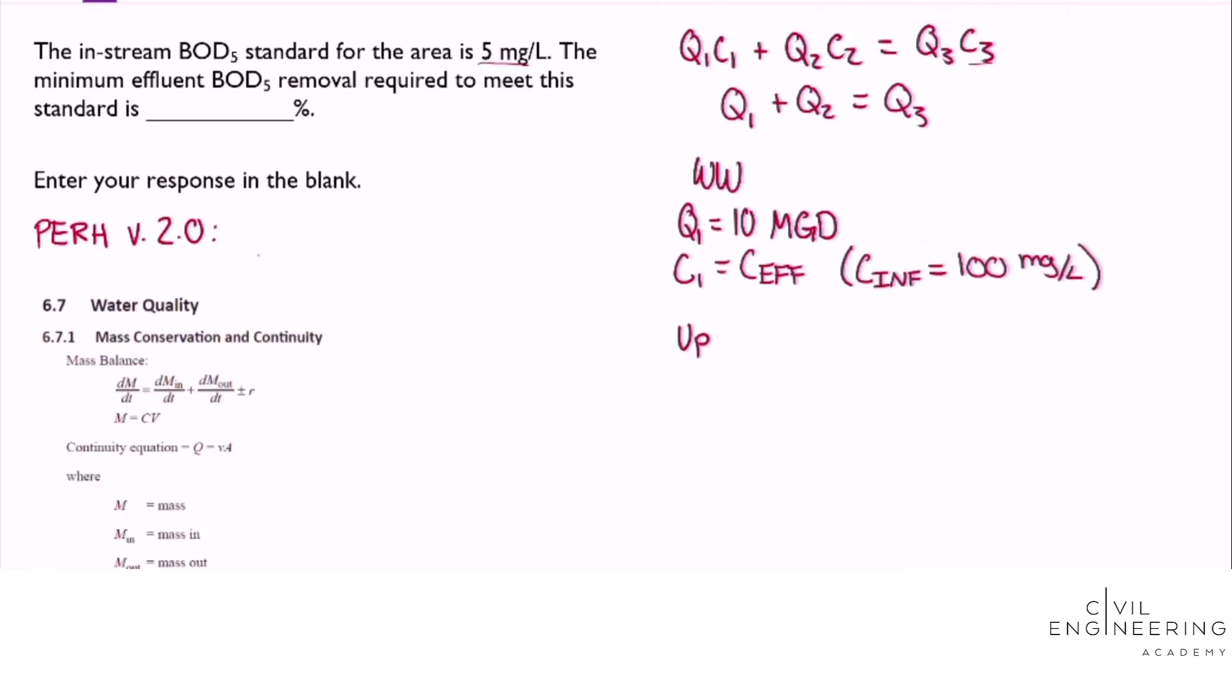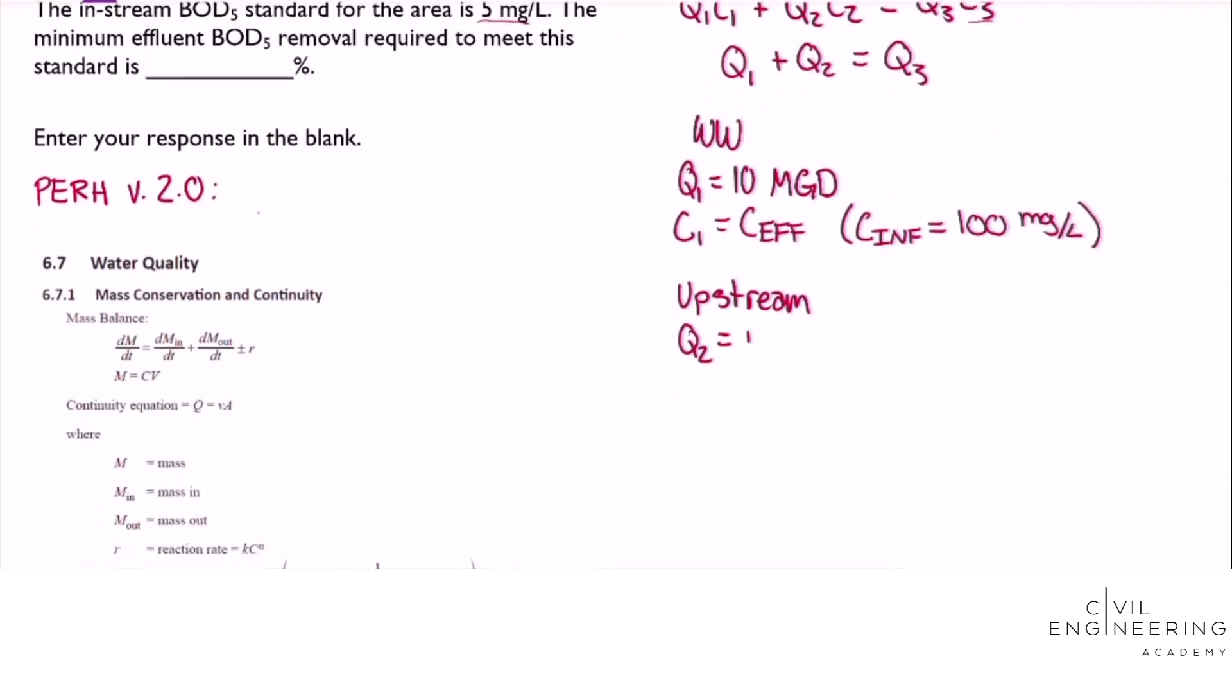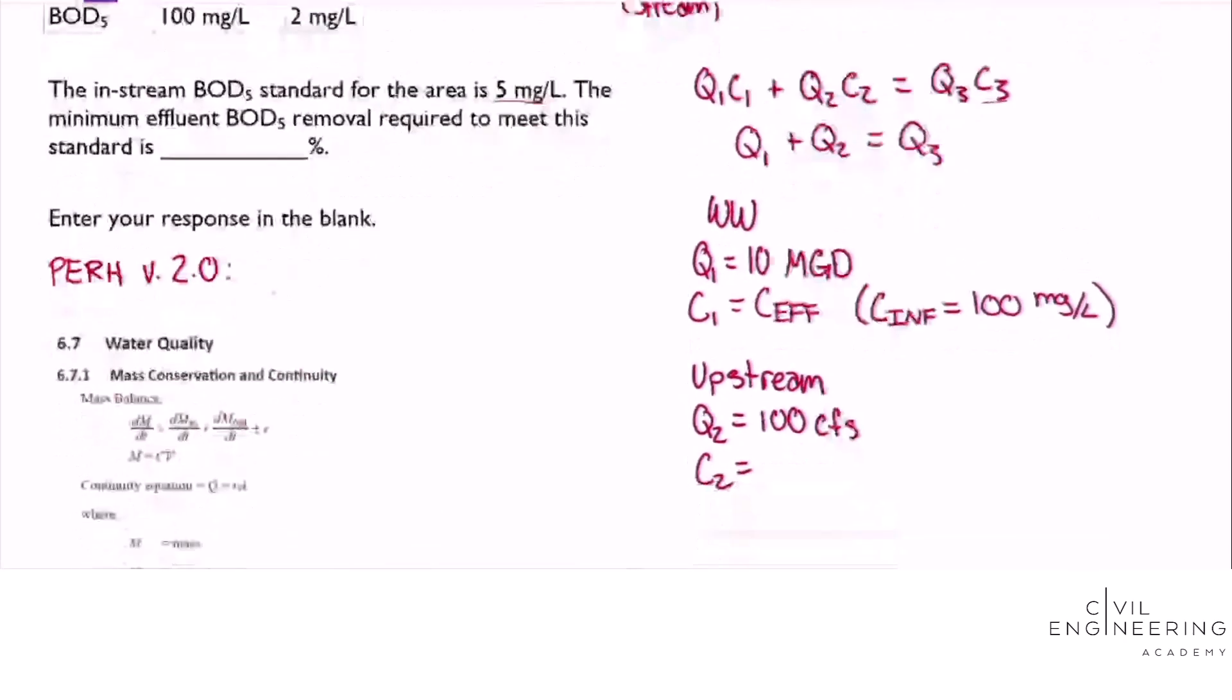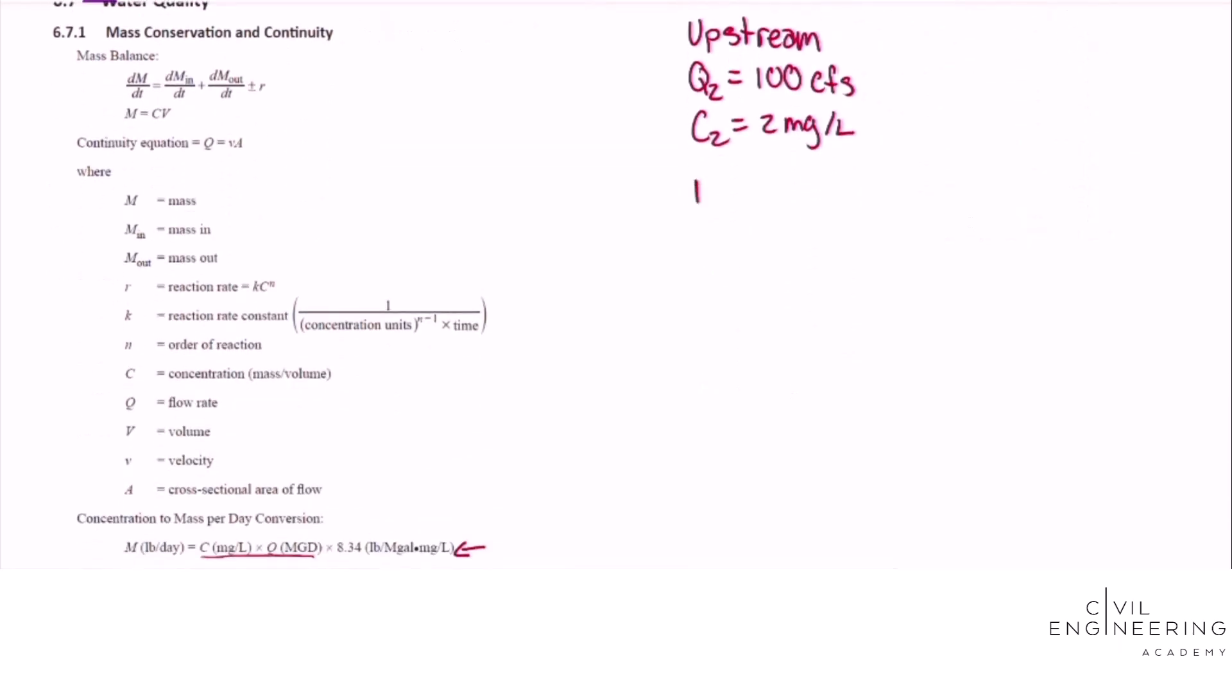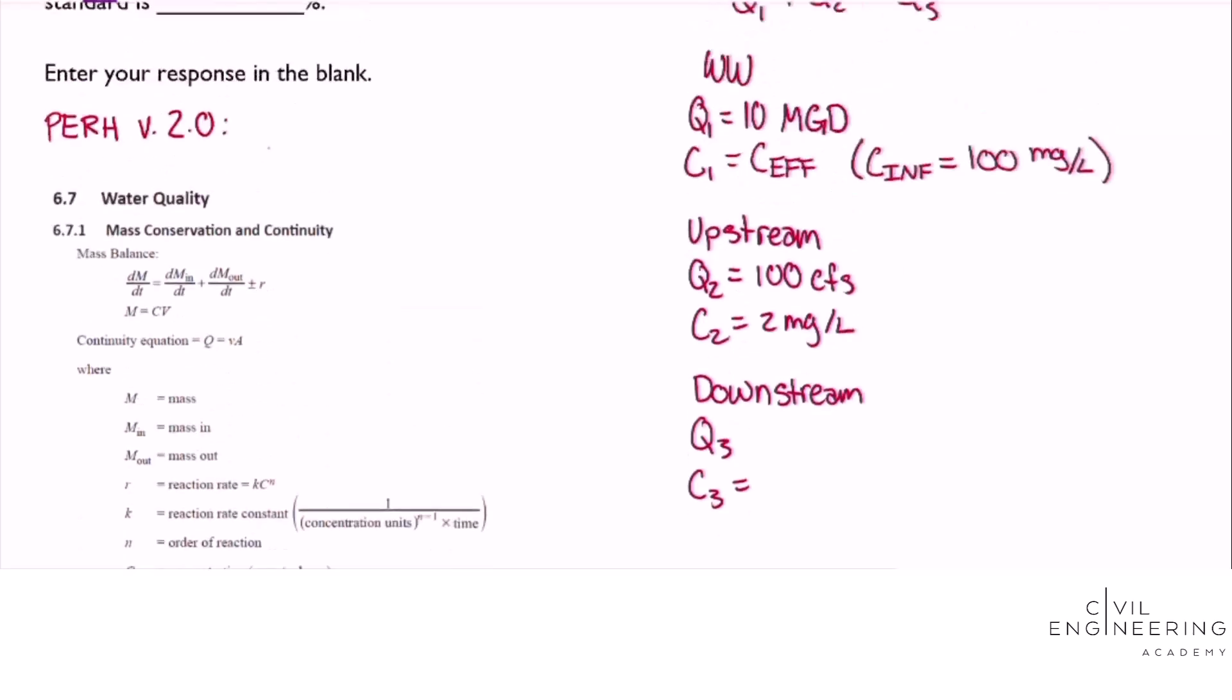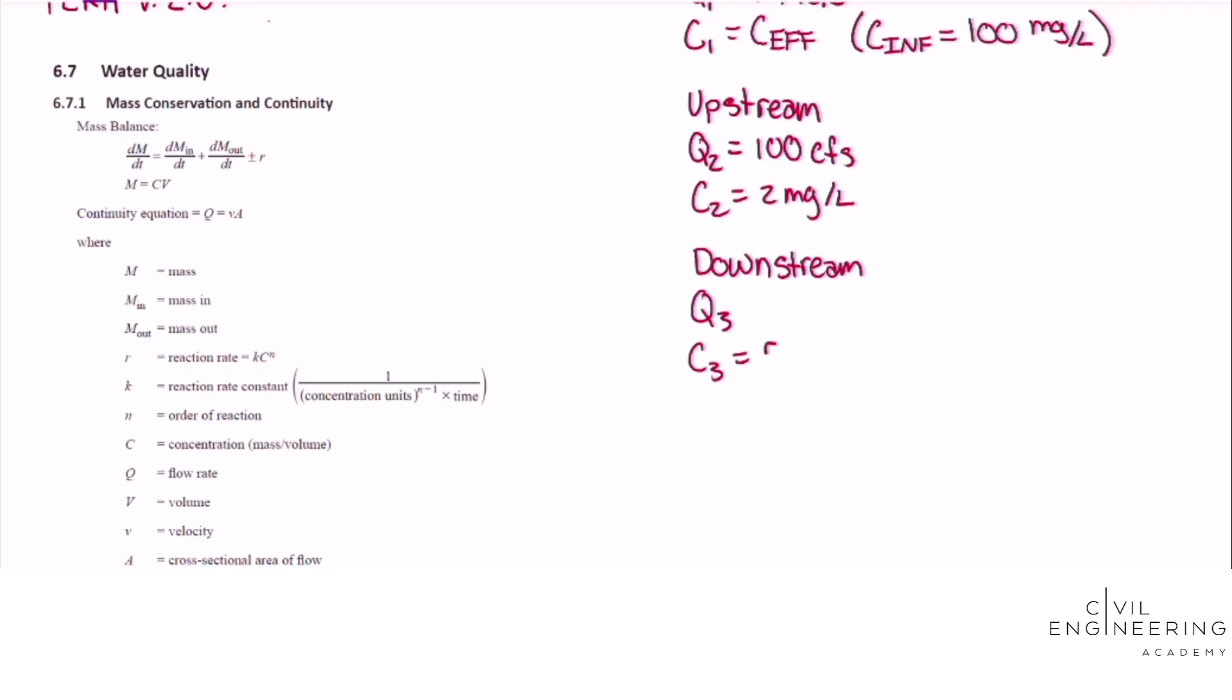The upstream portion will be Q2 equal to 100 cubic feet per second and C2 equal to that 2 milligrams per liter. The downstream portion after the mixing of these two streams will be Q3 and C3 which will be that 5 milligram per liter goal after the mixing.